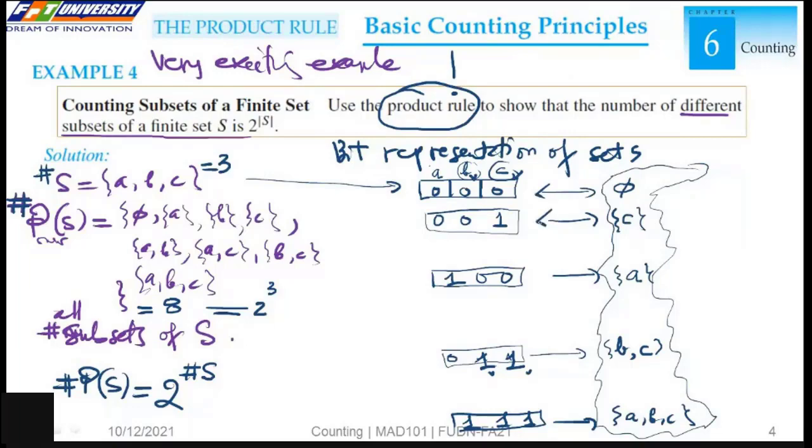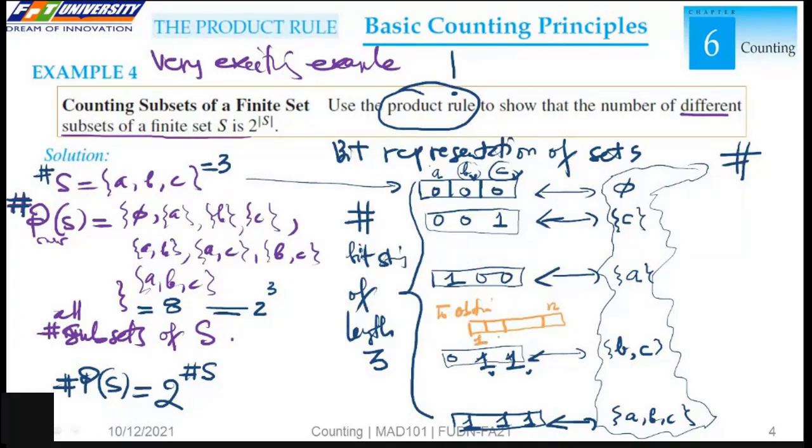We want to count how many subsets. Because this is a one-to-one correspondence, to obtain a bitstream of length n, we have two options for bit 1, for bit 2, 0 or 1 here, 0 or 1 here. We have two options for one bit. Because we have n bits, by the product rule, we have 2 multiply 2 multiply 2. The result is 2 to the power of n.